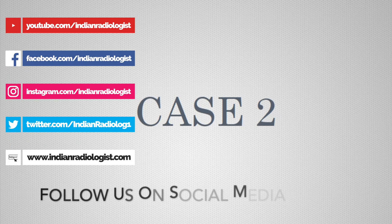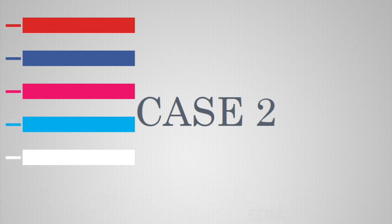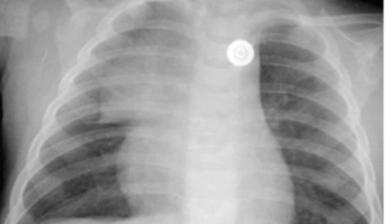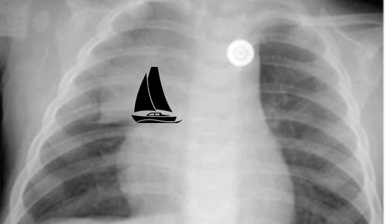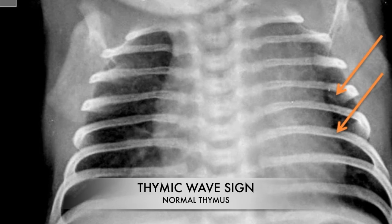In Case 2, I will demonstrate a variety of thymic appearances on chest X-ray. One should be familiar with the appearance of the thymus. Let us review a few thymic signs. The sail sign: the lateral border of the thymus is sharp, as the thymus is a mediastinal organ, and its lower margin is sharp, giving the appearance of a sail or boat.